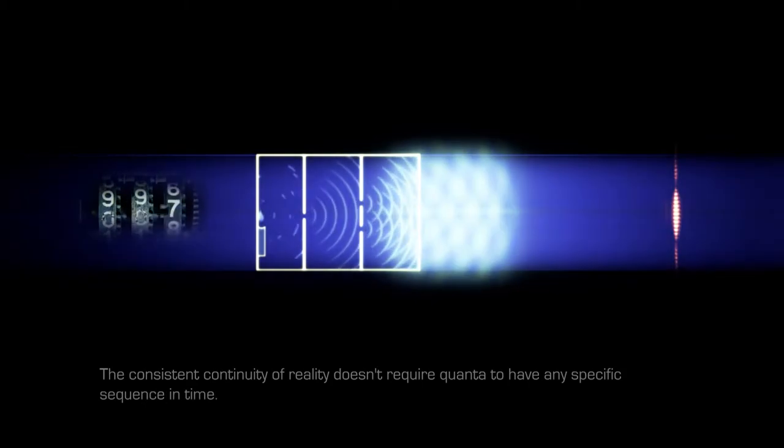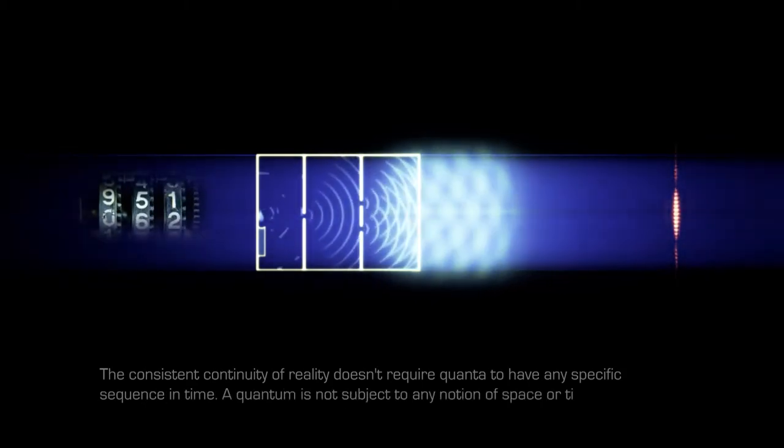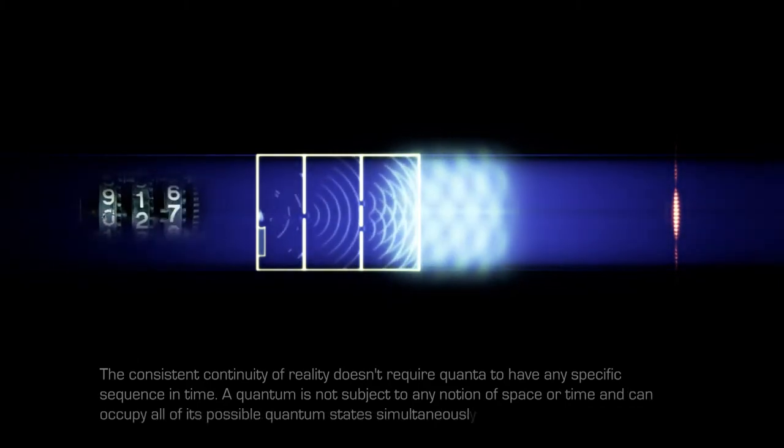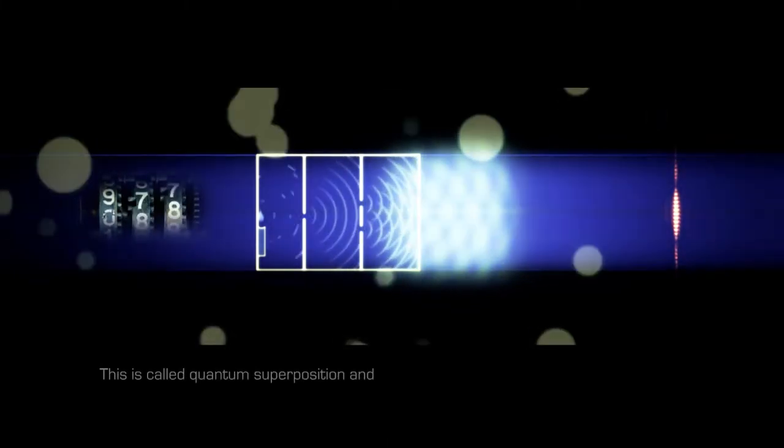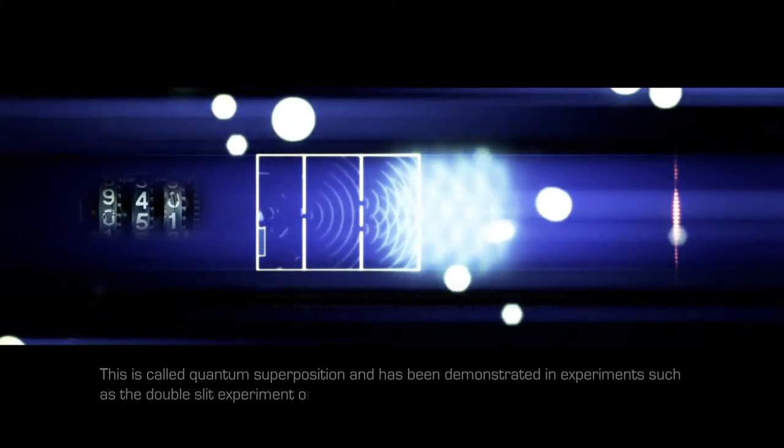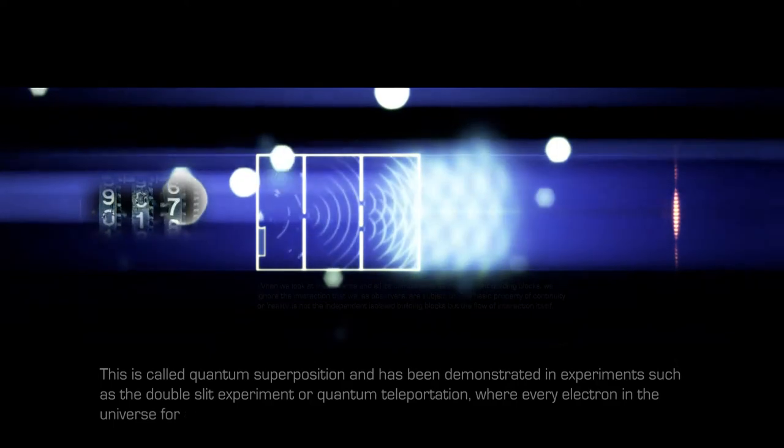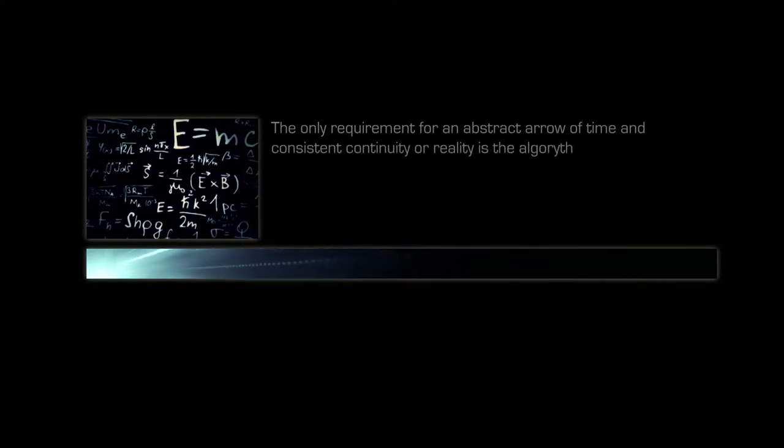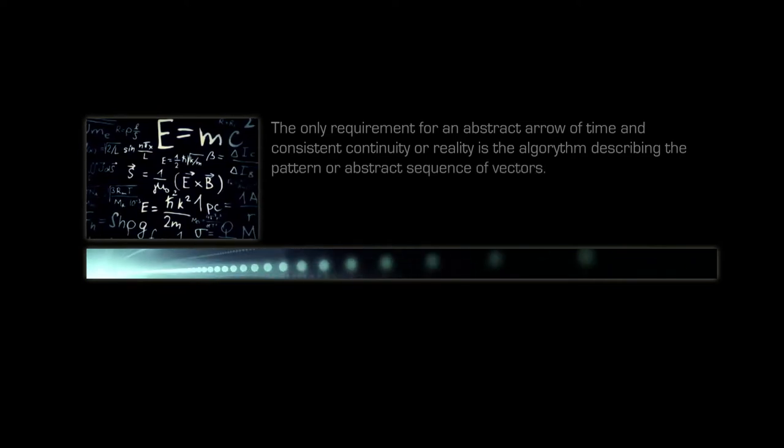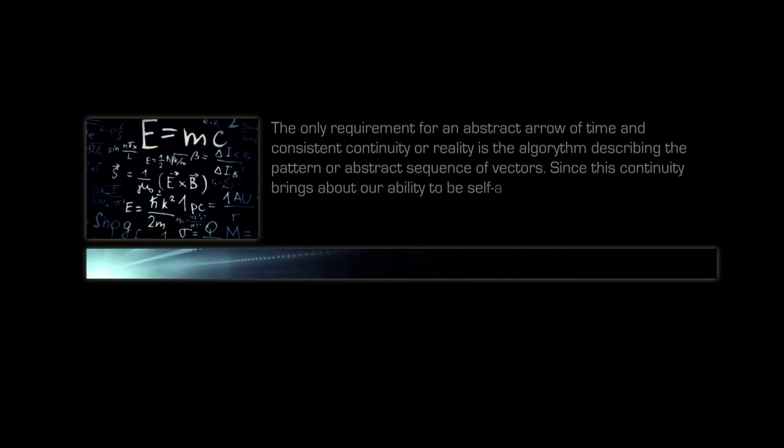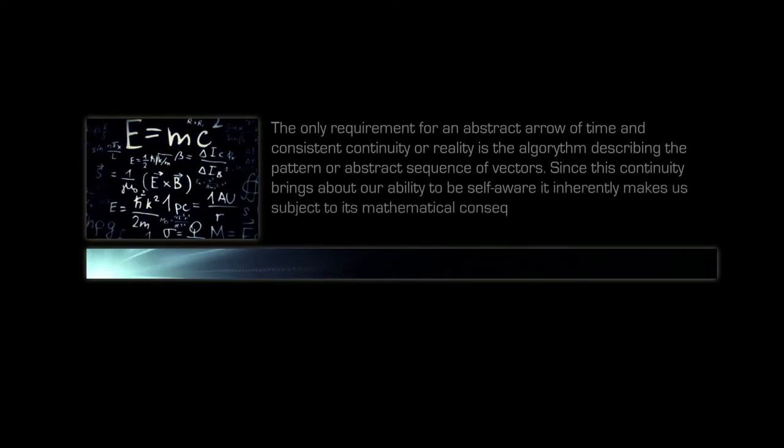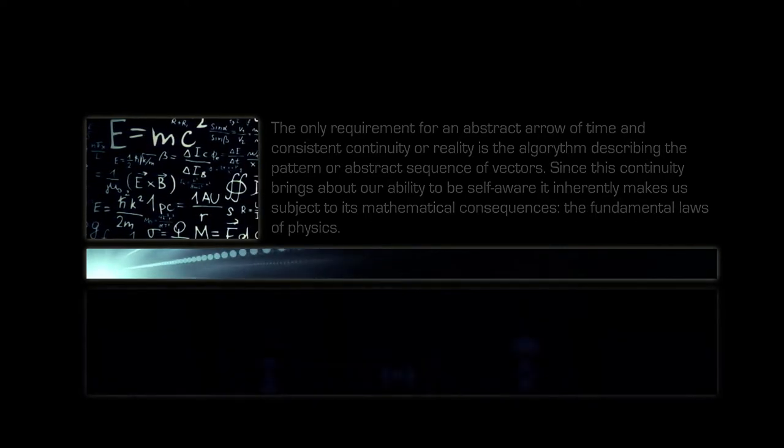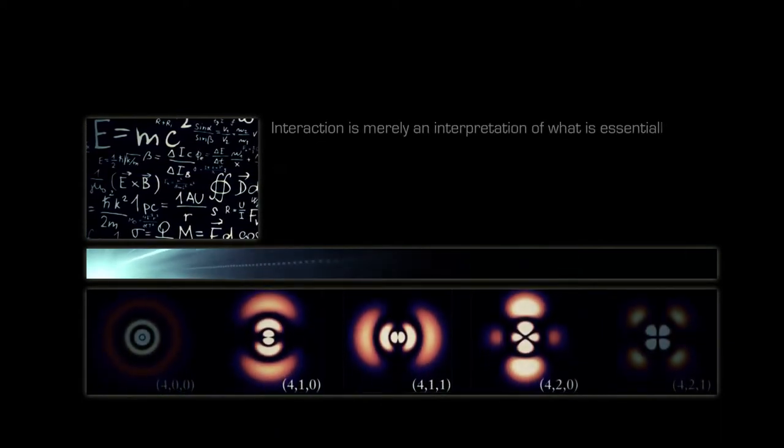The consistent continuity of reality does not require quanta to have any specific sequence in time. A quantum is not subject to any notion of space or time and can occupy all of its possible quantum states simultaneously. This is called quantum superposition and has been demonstrated in experiments such as the double slit experiment or quantum teleportation, where every electron in the universe for example could be the exact same one. The only requirement for an abstract arrow of time and consistent continuity or reality is the algorithm describing the pattern or abstract sequence of vectors. Since this continuity brings about our ability to be self-aware, it inherently makes us subject to its mathematical consequences, the fundamental laws of physics.